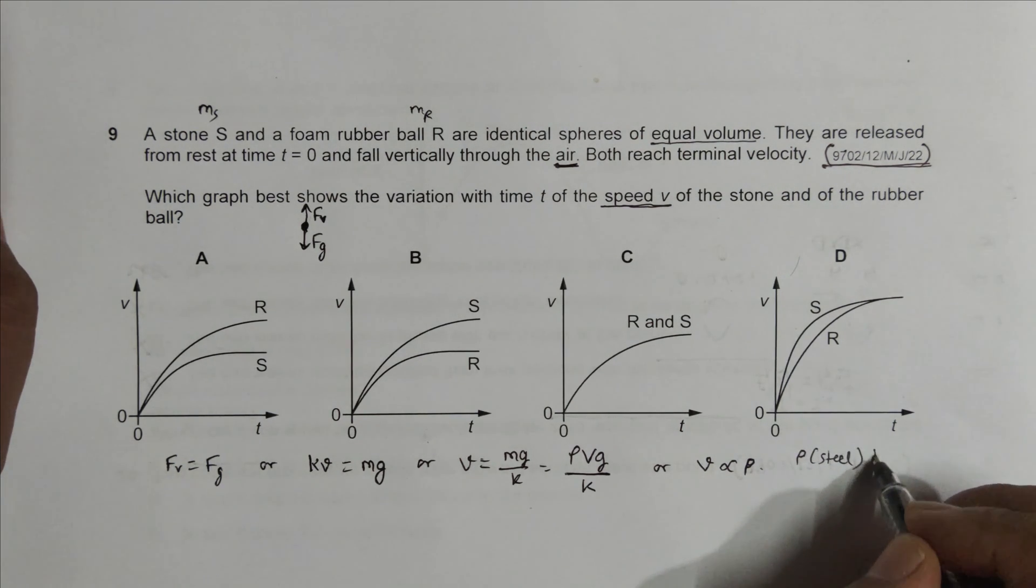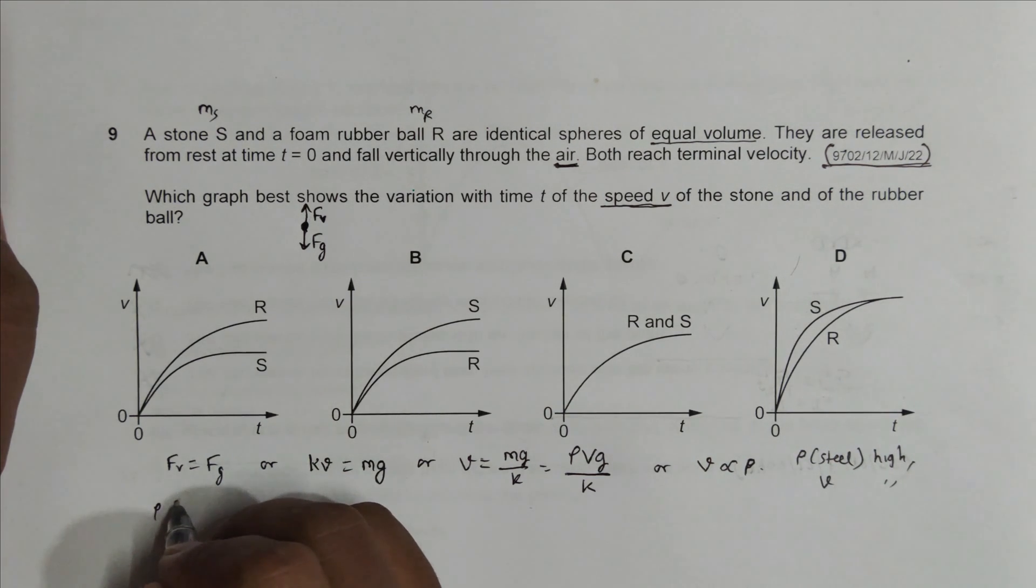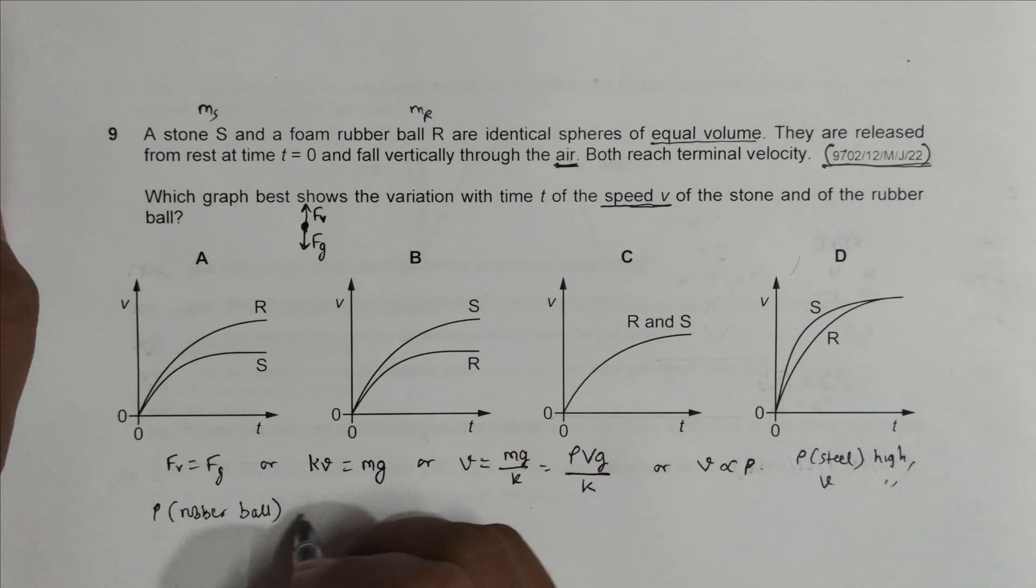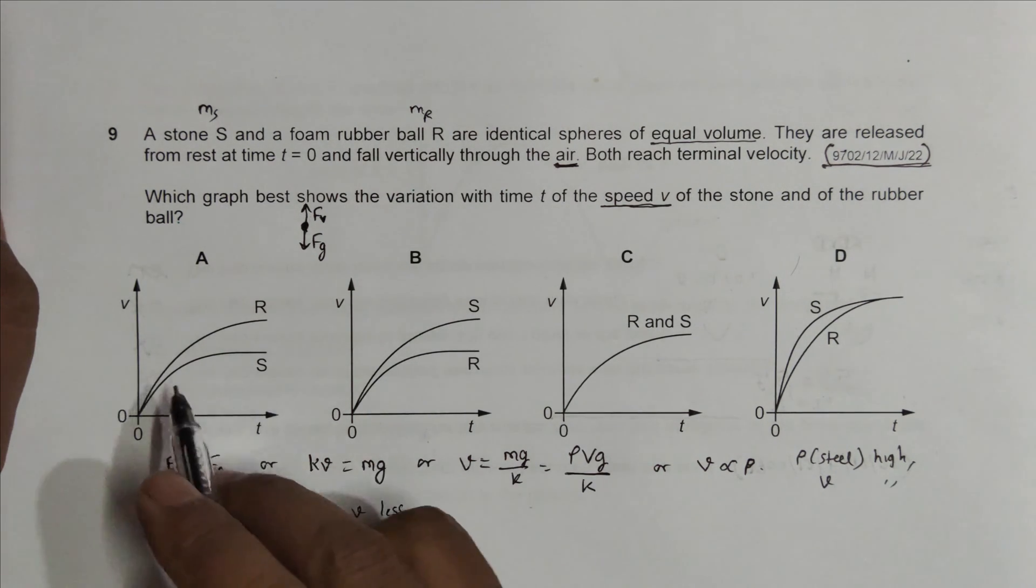That means v should be high. And ρ of this rubber ball or foam rubber ball is less, so its v should be less.